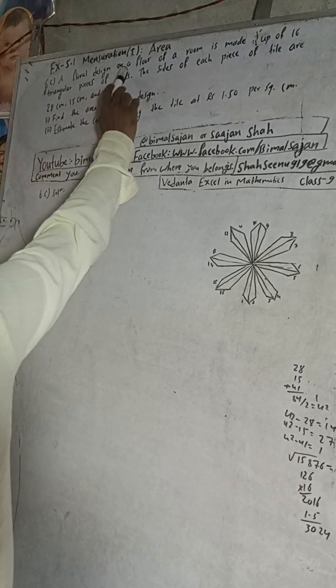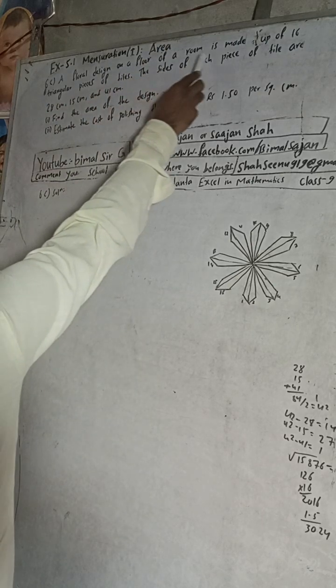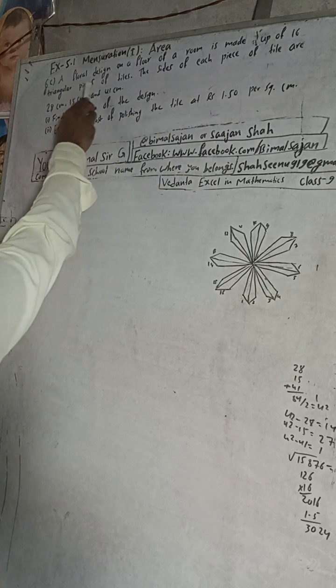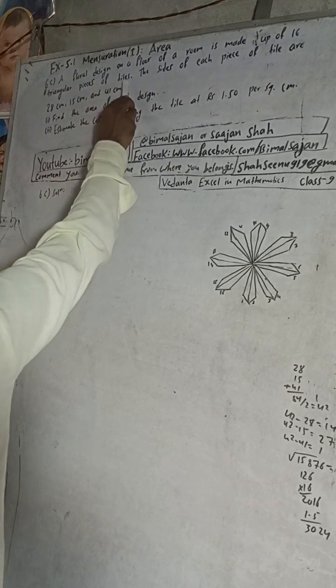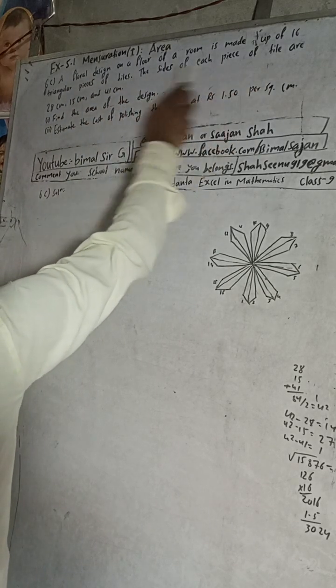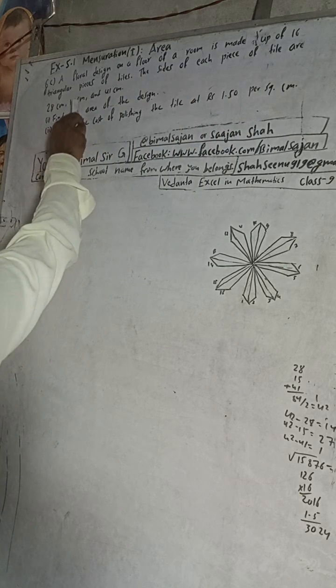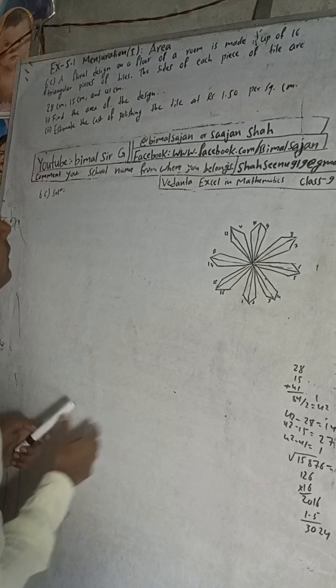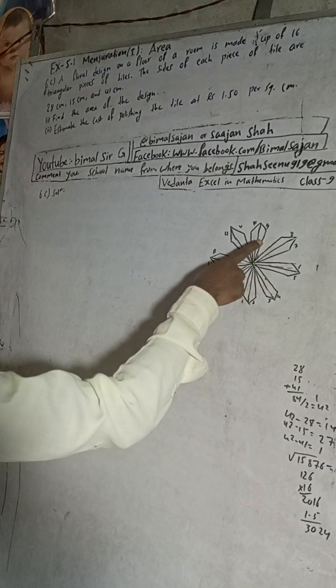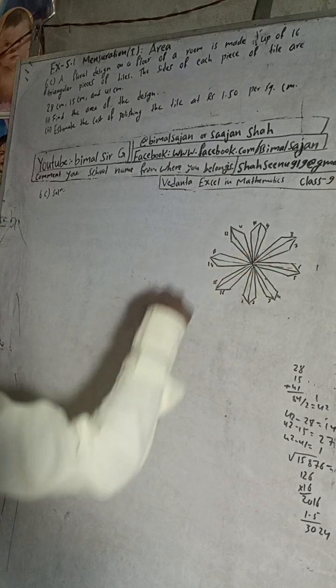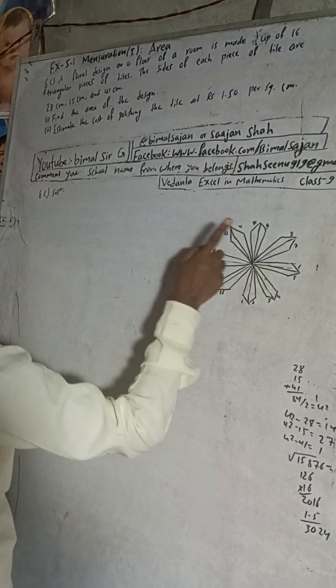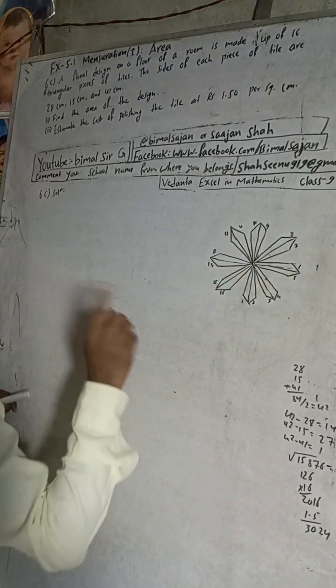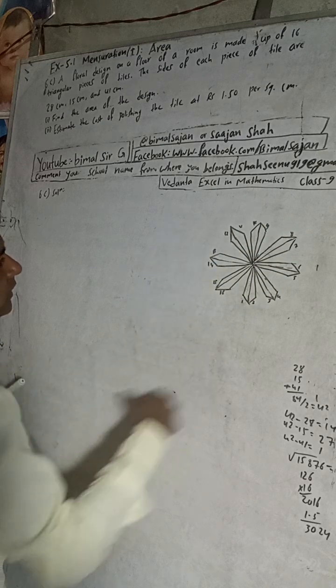The question is here: a floral design on a floor of a room is made up of 16 triangular pieces of tiles. The side of each piece of the tile are 28 cm, 15 cm and 41 cm. So this is the floral design, means flower design, it is made with a piece of tile, so 16 piece of tiles are there.